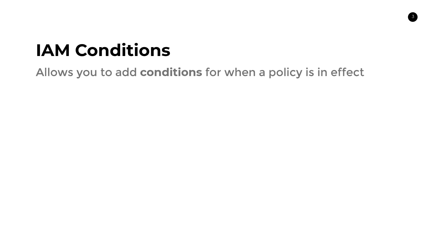Let's move on to the main concepts. The first is something called IAM conditions. I'll be completely honest — I had no idea IAM conditions even existed. It turns out IAM conditions are an optional attribute of your IAM policy, so you don't have to use them, but they're there to provide some very interesting functionality. IAM conditions are a component of your IAM policy that allows you to add conditions or constraints for when a policy is in effect.